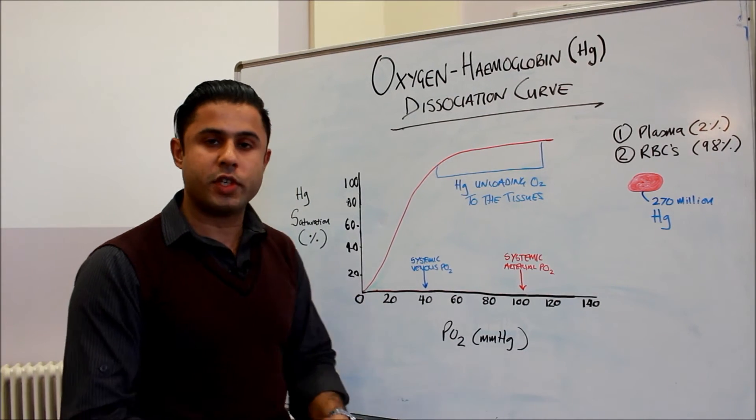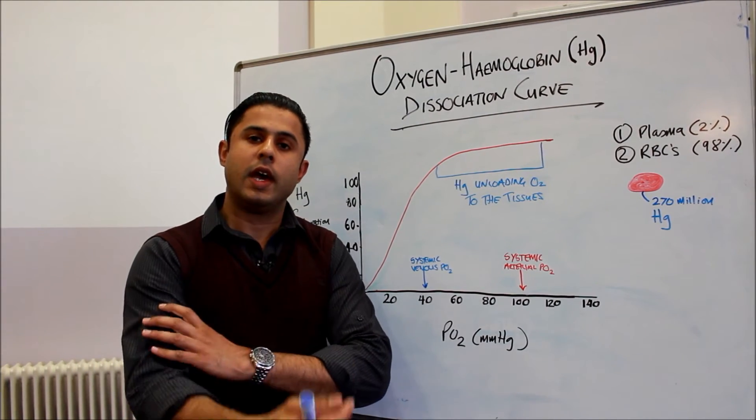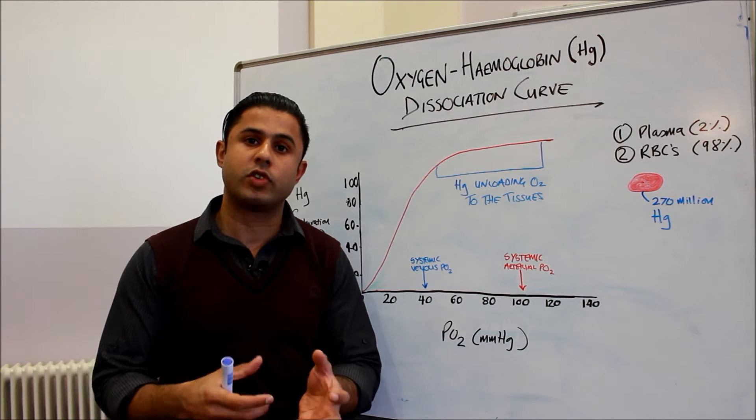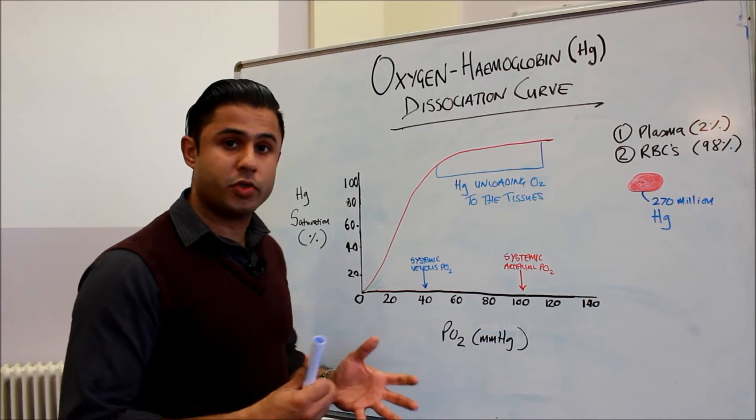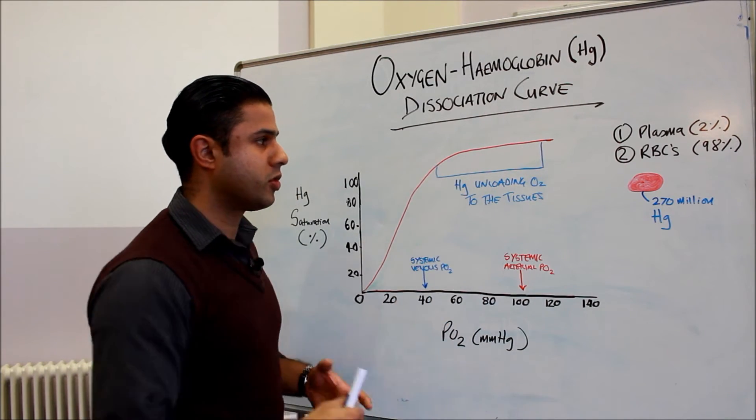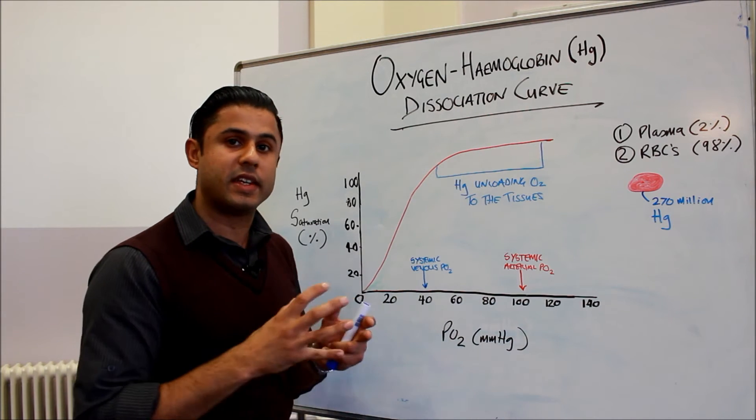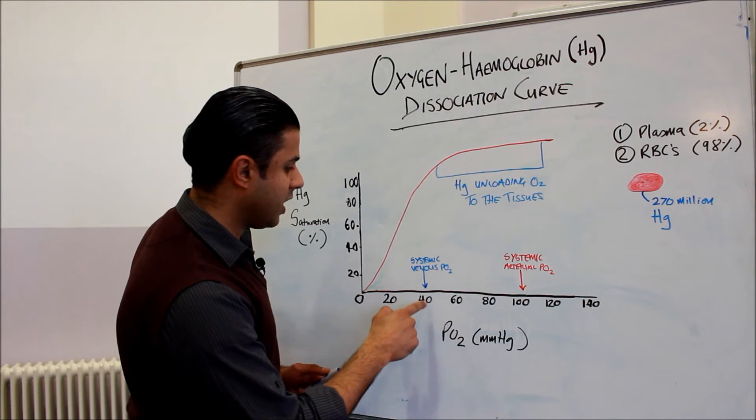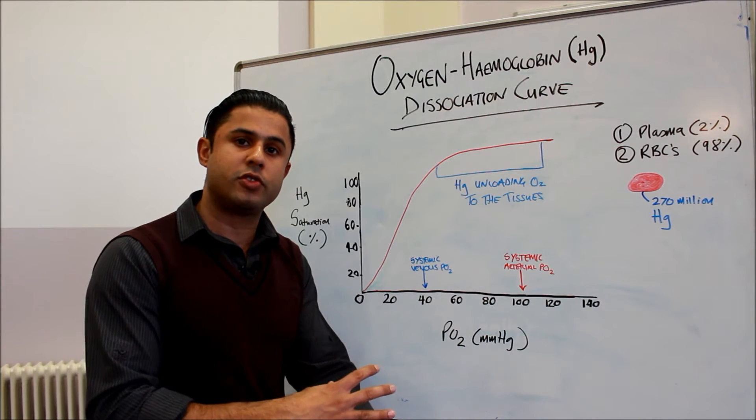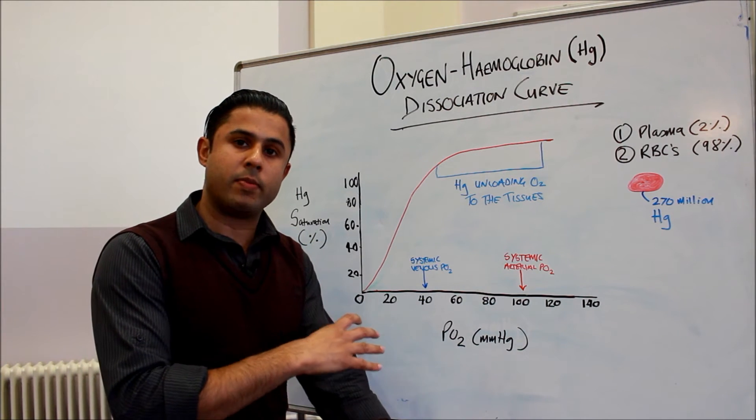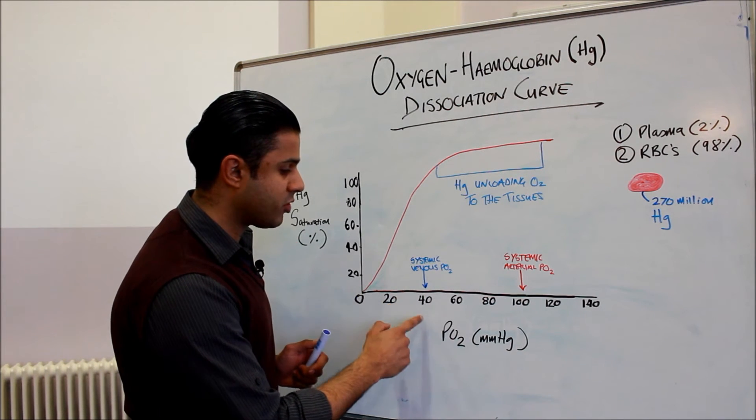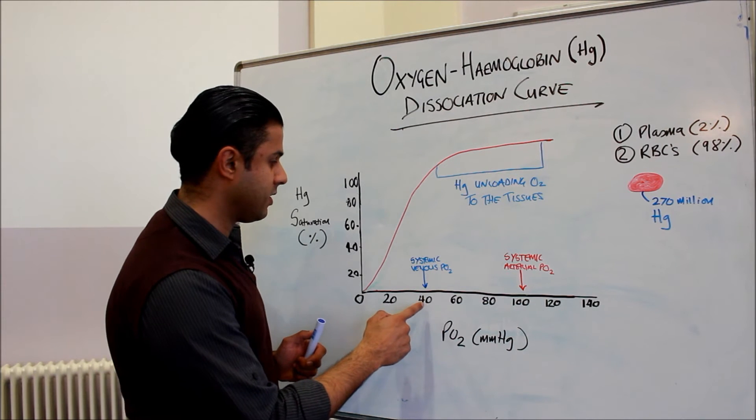So as we're using up oxygen to fuel muscle contractions, we're having energy production which is requiring oxygen to produce ATP. So the hemoglobin is going to those tissues and it's actually unloading oxygen to the tissues, it's dissociating away. So by the time the blood gets to the venous circulation—so it's been through the tissues, gathered into the venules, into the veins and returning back to the heart—we have a pressure of oxygen of about 40 millimeters of mercury.